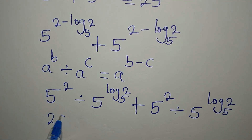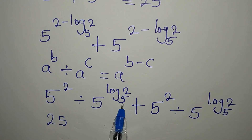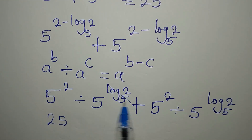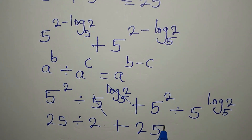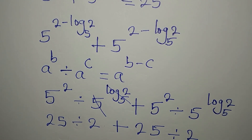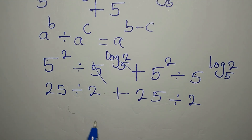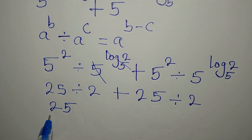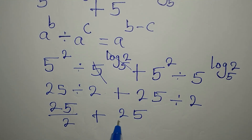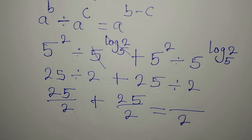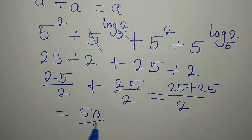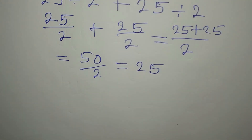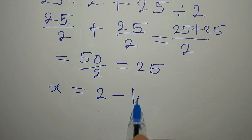Now, 5 to the power of 2 is 25. And 5 to the power of log 2 to base 5 — these two nullify each other and give us 2, so we divide by 2. Then plus again: 25 divided by 2. Rearranging, this is 25 over 2 plus 25 over 2. The LCM is 2, adding the numerators: 25 plus 25 gives 50 over 2, which equals 25. This confirms that x is truly 2 minus log 2 to the base of 5.